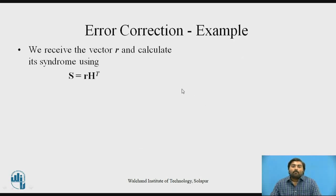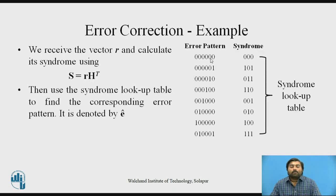For a received vector r, the syndrome is calculated as S = r × H^T, where r is the received vector — the same formula used previously, but with r instead of E_j. Using the lookup table, you can find the corresponding error pattern. If the syndrome for the received vector is 000, the error pattern is also 000.